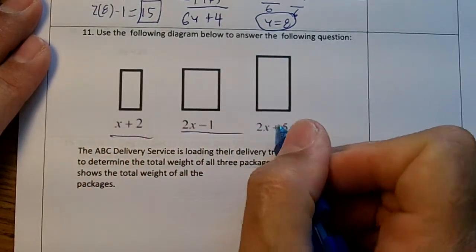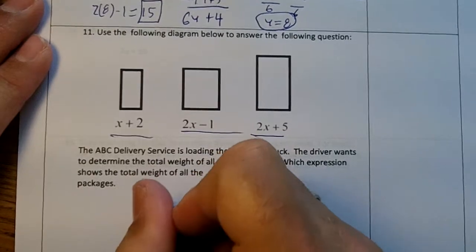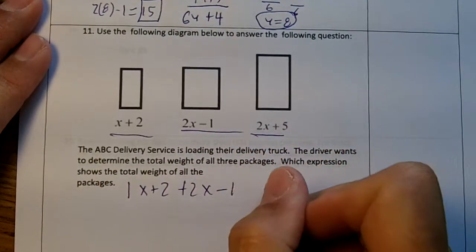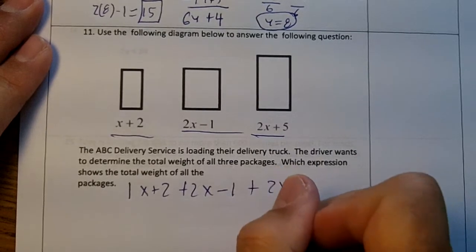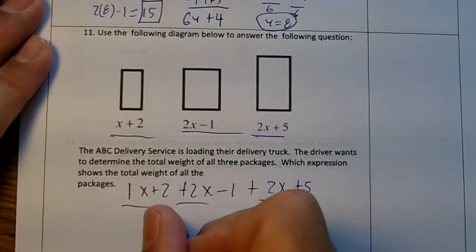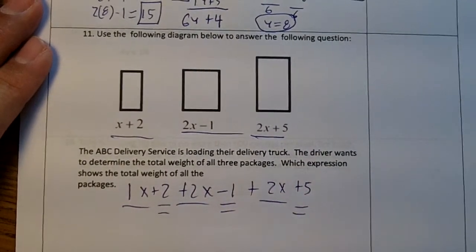So we need to find the sum of these. We're going to do x plus 2, and I'm going to put 1x, plus 2x minus 1, plus 2x plus 5. We're going to combine the x's, single underline those, combine the numbers, double underline those.